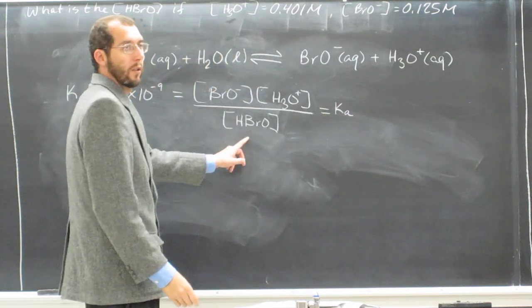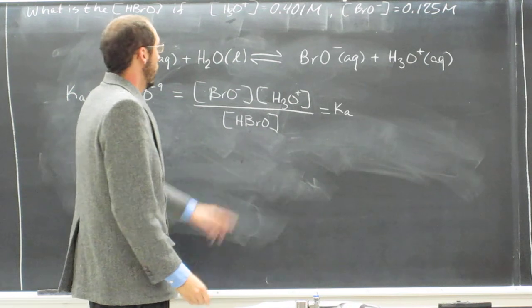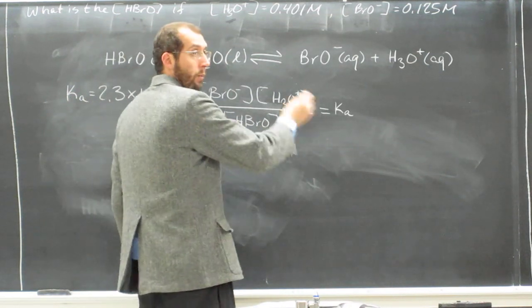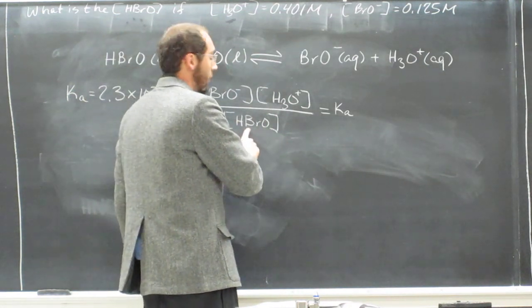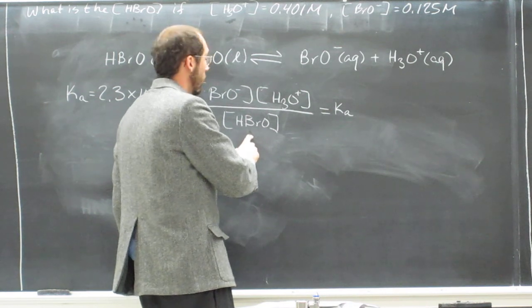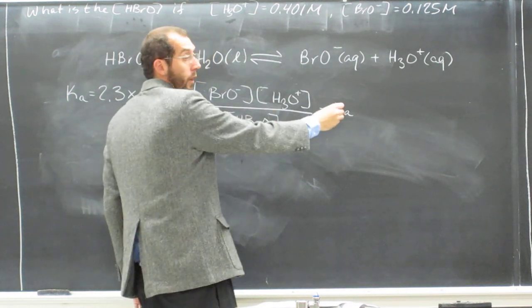So in order to get the concentration of hypobromous acid, we're just going to manipulate this equation and isolate this variable. So we'll just take this, multiply it over there, and divide it by Ka.